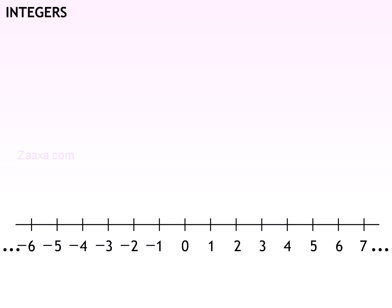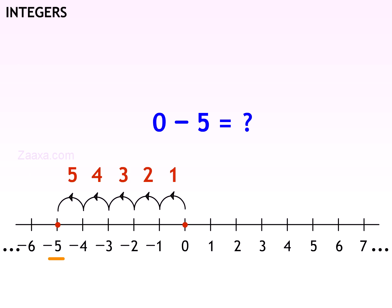To find a value that is less than 0, you have to move left on the number line. For example, to find the value of 0 minus 5, start at 0 and go 5 steps to the left. You get the answer minus 5.